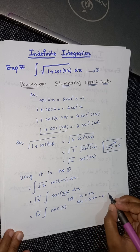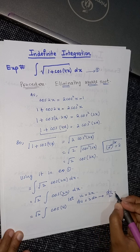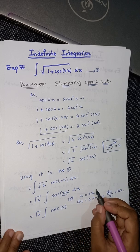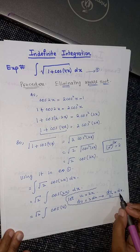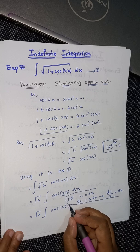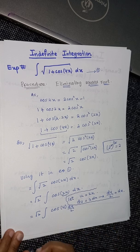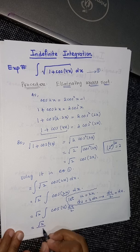If I substitute the value of dx here, I will get du over 2. That means I will get square root of 2 divided by 2 times cos u du. We know what is the integration of cos u: it is basically equal to sin u.